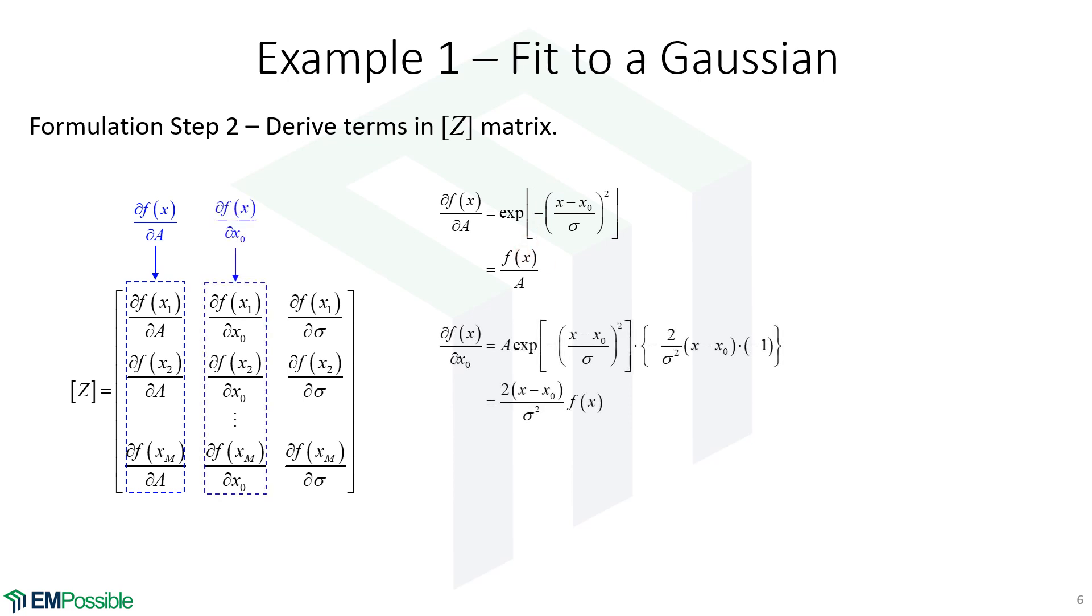Now we have the partial derivative with respect to X0. A little bit more work here. But in the end, we're left with this function multiplying our original function. And last, with respect to sigma, similar work here. Similar looking expression, a little bit different. Multiplying our original function. And as I mentioned, doing it this way, since we're already going to be evaluating F, that makes it a little bit easier to evaluate those partial derivatives.